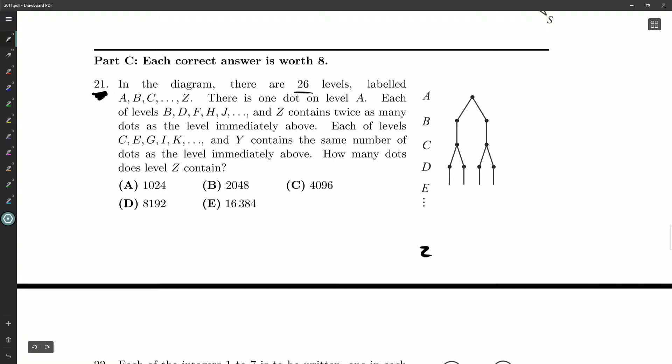There's one dot on level A, and then each of the levels B, D, F, so they alternate - B, D, and then it would go F, and then they'd skip G and go to H - contain twice as many dots as the level immediately above, so we double. From A, we double to B.